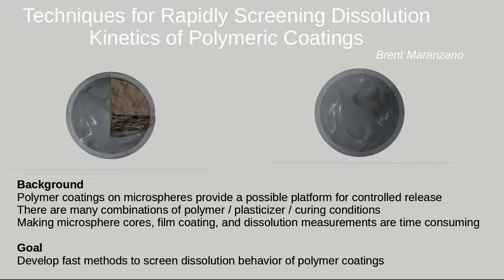This is a brief overview of several techniques developed to help screen the dissolution kinetics of polymeric coatings. Particularly, this work concentrated on the crizotinib project, which consists of microspheres. The microsphere itself consists of a waxy core containing the API, then is subsequently coated with a polymeric coating which controls the pH at which the core is released.